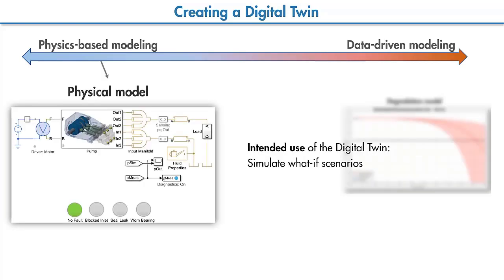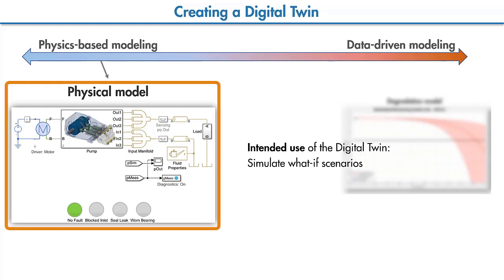If our intended use of the digital twin is different, let's say we want to simulate future scenarios and monitor how the fleet will behave under those scenarios, then we can use physics-based modeling. An example would be a physical model like this one, which is created by connecting mechanical and hydraulic components together.